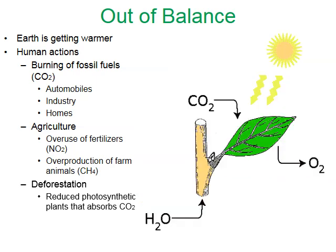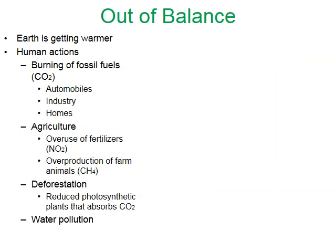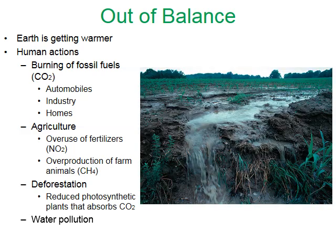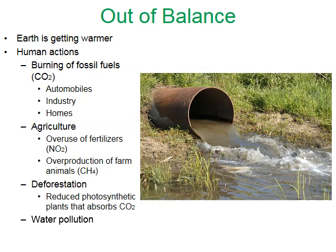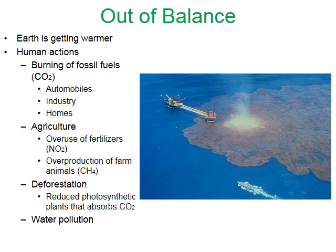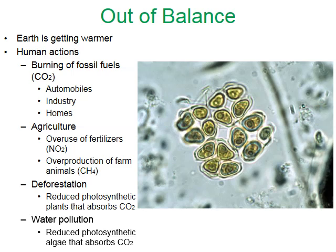Remember that carbon dioxide is one of the reactants of photosynthesis. Plants absorb and remove carbon dioxide from the environment in order to do photosynthesis. Water pollution is another factor — runoff from farms into rivers, lakes, streams, and oceans, from storm drains, sewage, and oil spills. Polluted waterways are causing the slow death of photosynthetic algae, which also perform photosynthesis and remove carbon dioxide from the atmosphere.